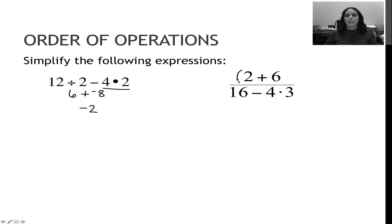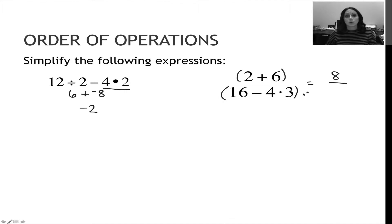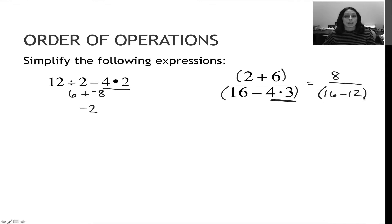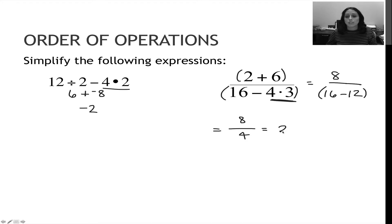For the second question, this is a division problem, so I'll pretend there are parentheses on the top and bottom. On top: 2 plus 6 gives 8. On the bottom I have 16 minus 4 times 3. Multiplication happens before subtraction, so 4 times 3 is 12, giving 16 minus 12. I can't divide yet because the bottom is still implied parentheses. Bottom becomes 4. Now 8 divided by 4 is 2 — that's my final answer.